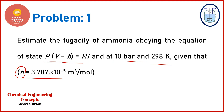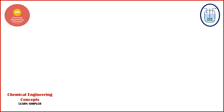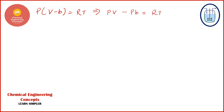Now let's see the solution. First, we are given the equation of state p(v - b) = RT. We can rearrange this equation by introducing the compressibility factor z. Expanding: pv - pb = RT. Since z = pv/RT, we can write z = 1 + pb/RT.